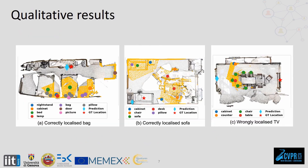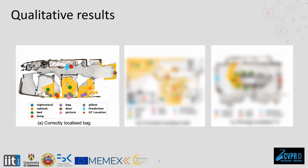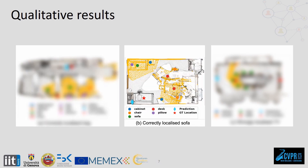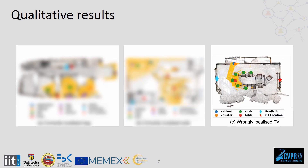Here we show three examples of localization obtained with our approach. The yellow area defines the opposite part of the scene, the colored dots indicate the visible objects, the cyan diamond is the predicted location, and the red star is the ground truth location of the object. In the first example, our network correctly predicts that the bag is near the desk on the opposite side of the bed. In the second example, the network infers that the sofa is facing the other sofa on the opposite side of the room. In the third example, the network fails to locate the television due to the symmetry of the room.